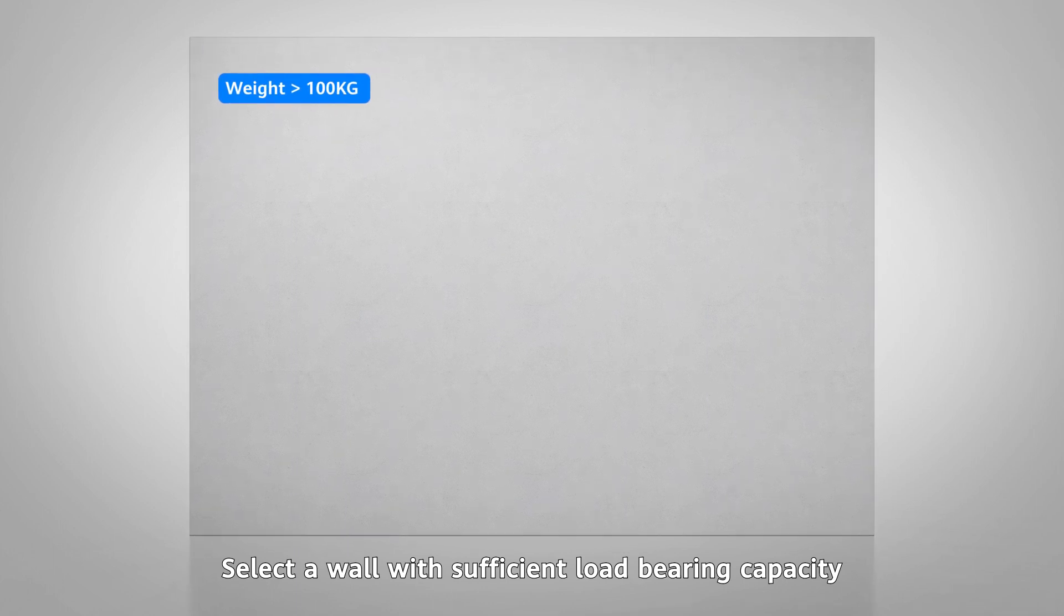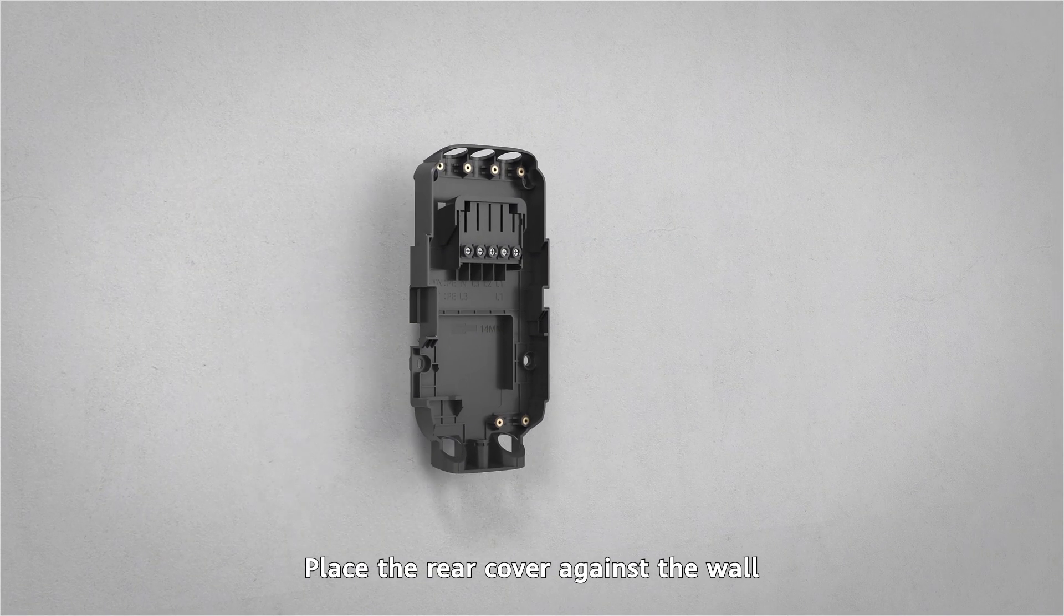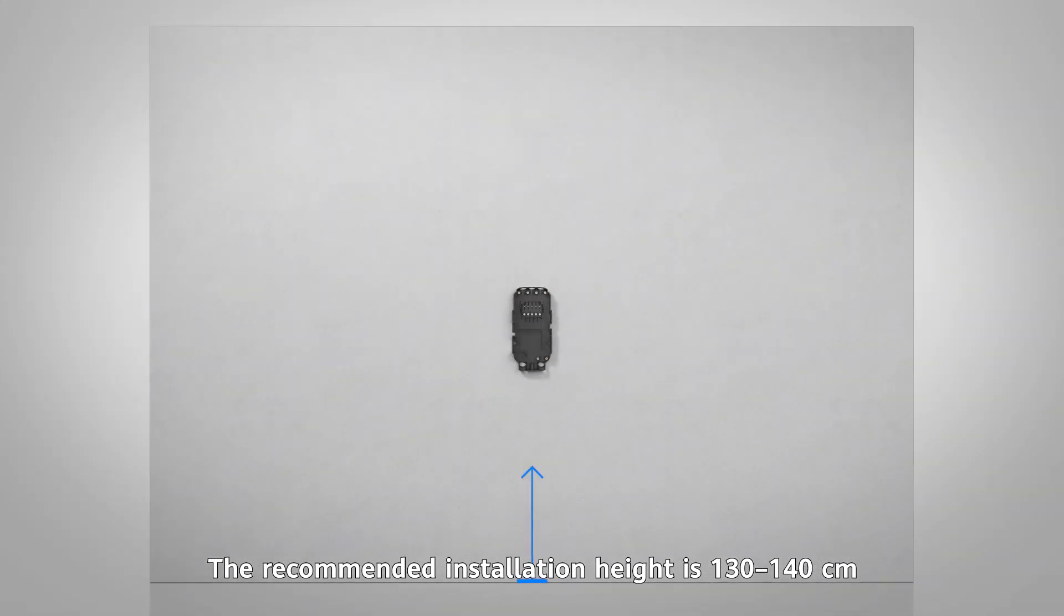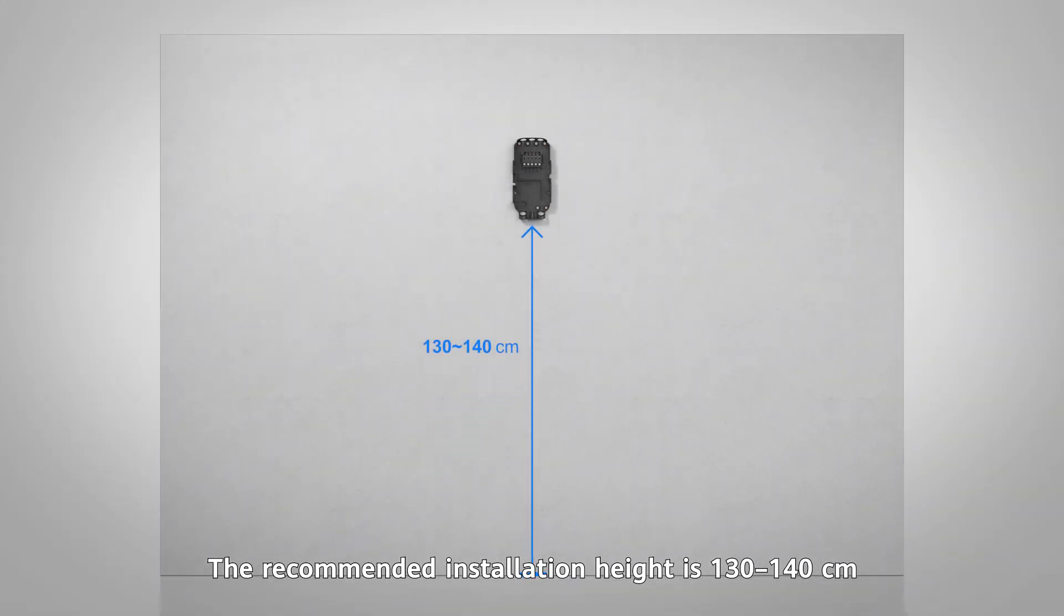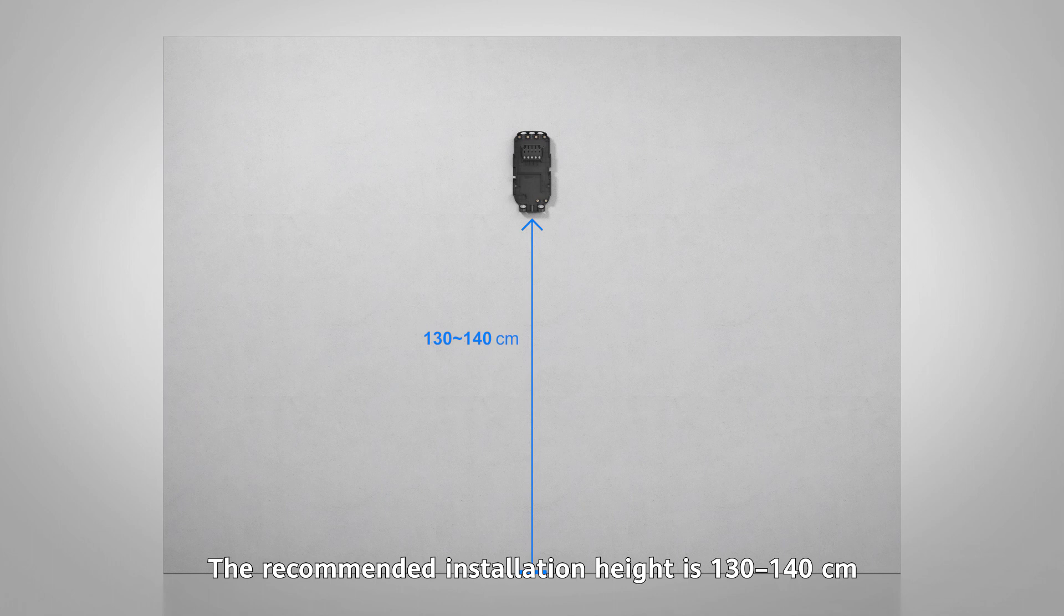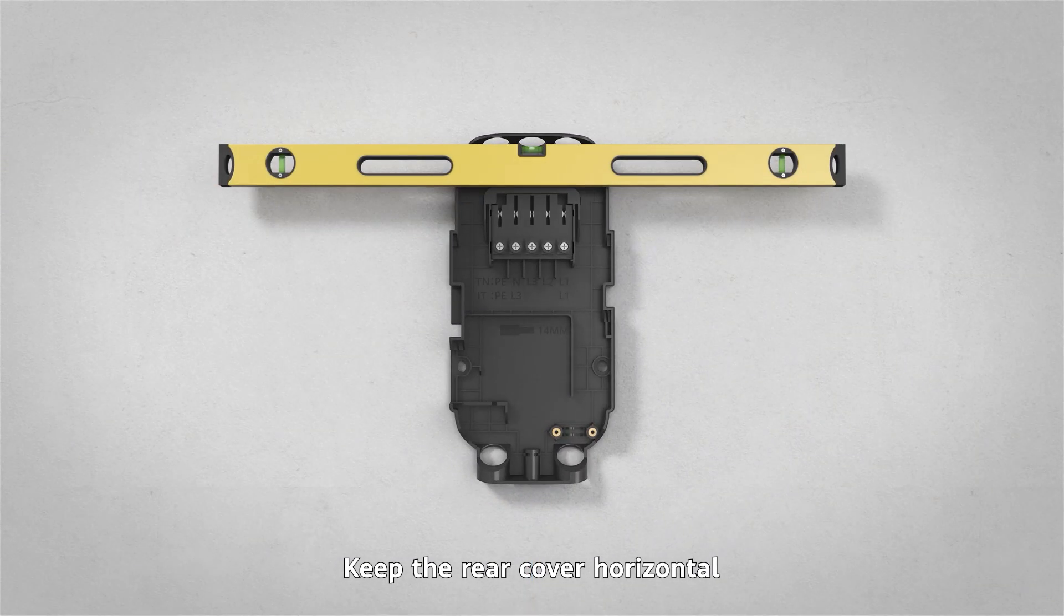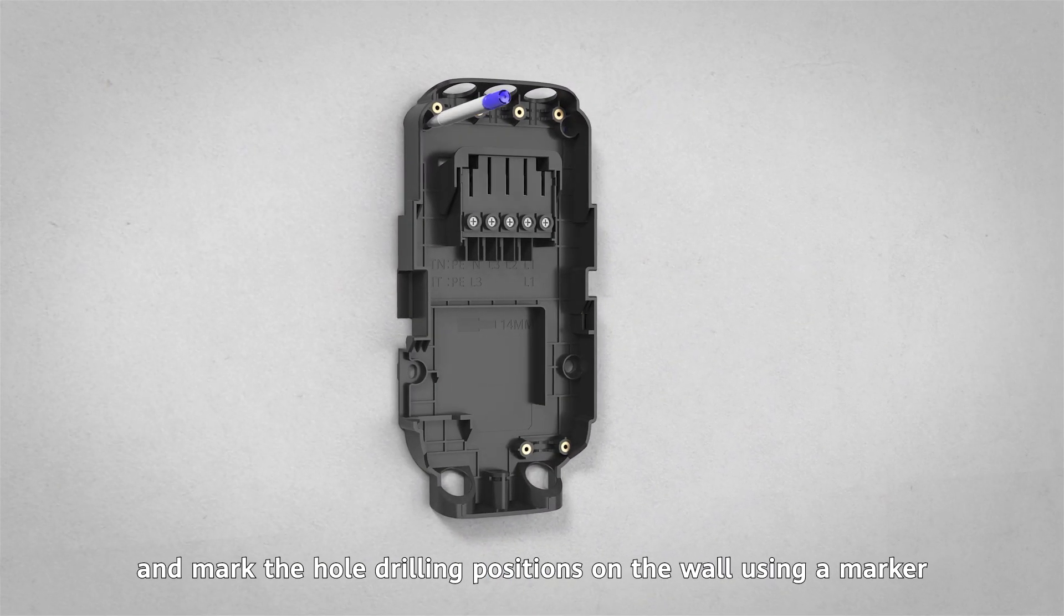Select a wall with sufficient load bearing capacity. Place the rear cover against the wall. The recommended installation height is 130 to 140 centimeters. Keep the rear cover horizontal and mark the hole drilling positions on the wall using a marker.